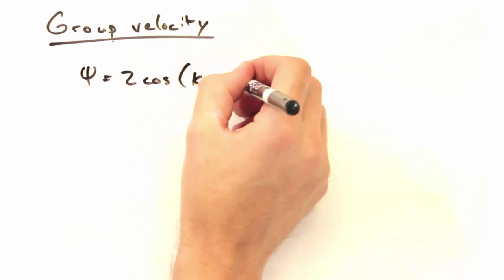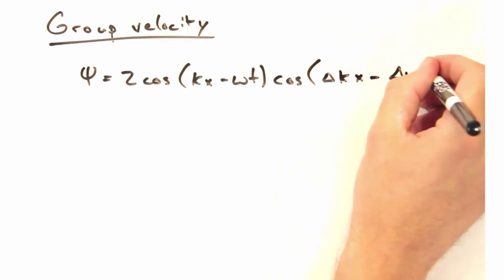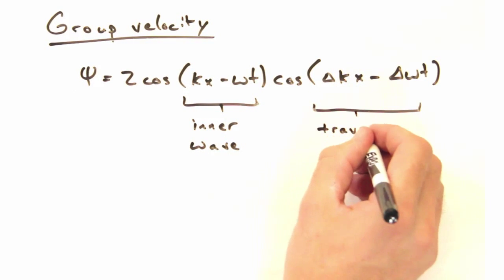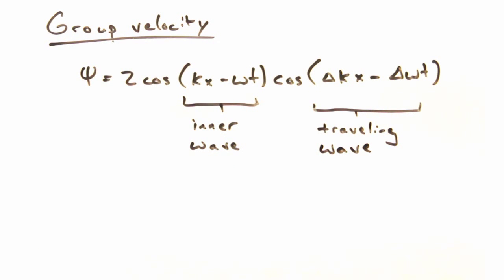Through the magic of trig, we can rewrite these two equations in the following form, where this term describes the inner wave, and this term describes the traveling wave packet. Then which one goes with the phase and group velocities?